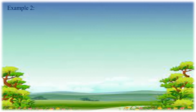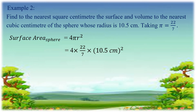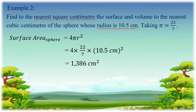Let us have example number 2. Find, to the nearest square centimeter, the surface area and, to the nearest cubic centimeter, the volume of a sphere whose radius is 10.5 centimeters, taking pi equal to 22 over 7. Using the formula 4πR squared, with R equal to 10.5 cm, we substitute to get 4 times 22/7 times 10.5 squared. Expressing to the nearest square centimeter, the surface area is 1386 square centimeters.